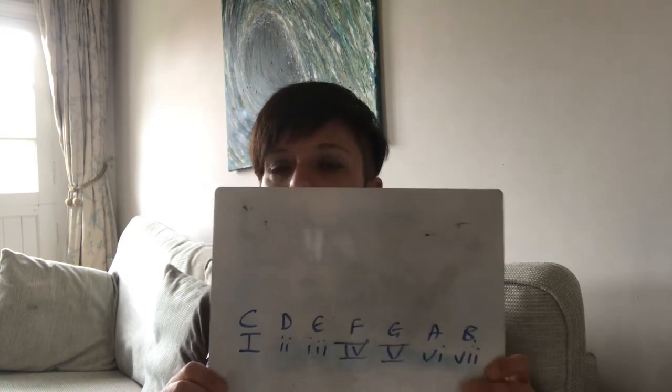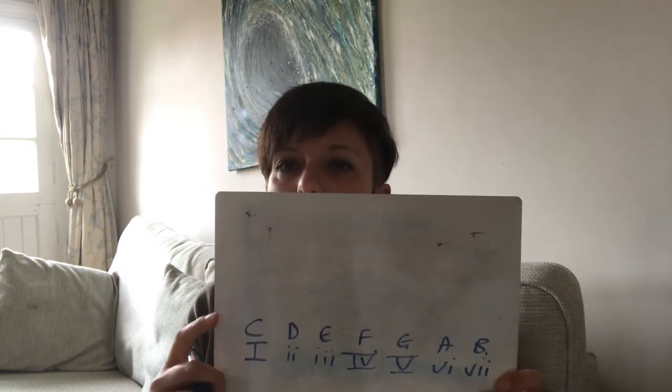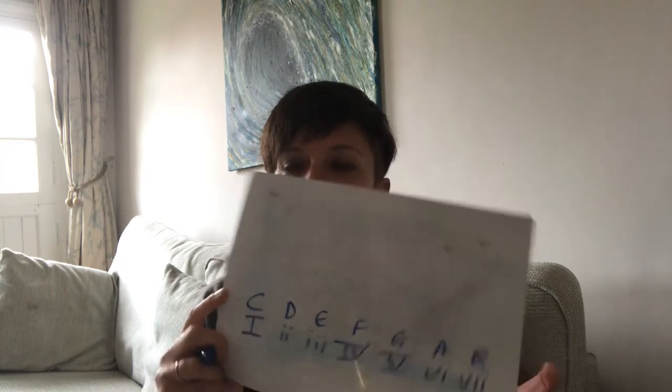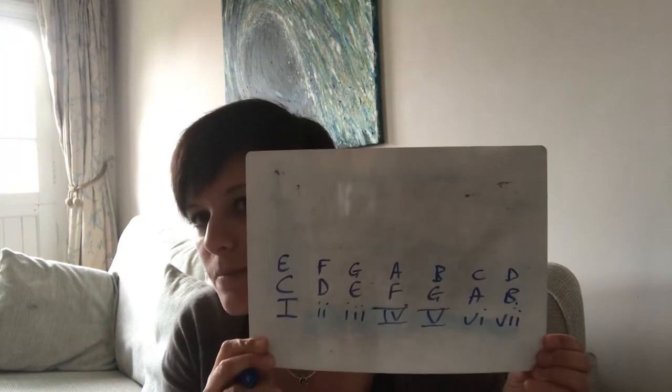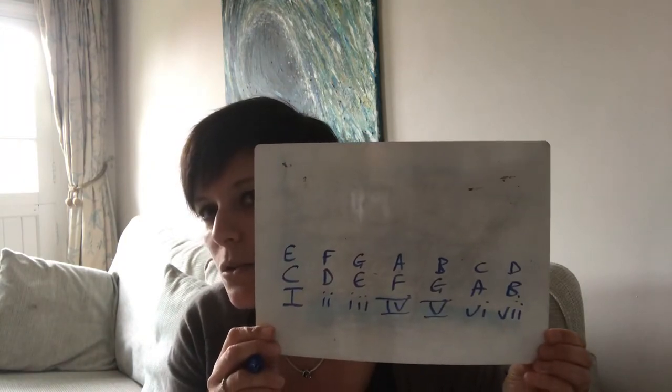Now, if I want the third of the chord, I'm going to start by writing E there and then go E, F, G, A, B, C, D, which will give me all the thirds of the chords.